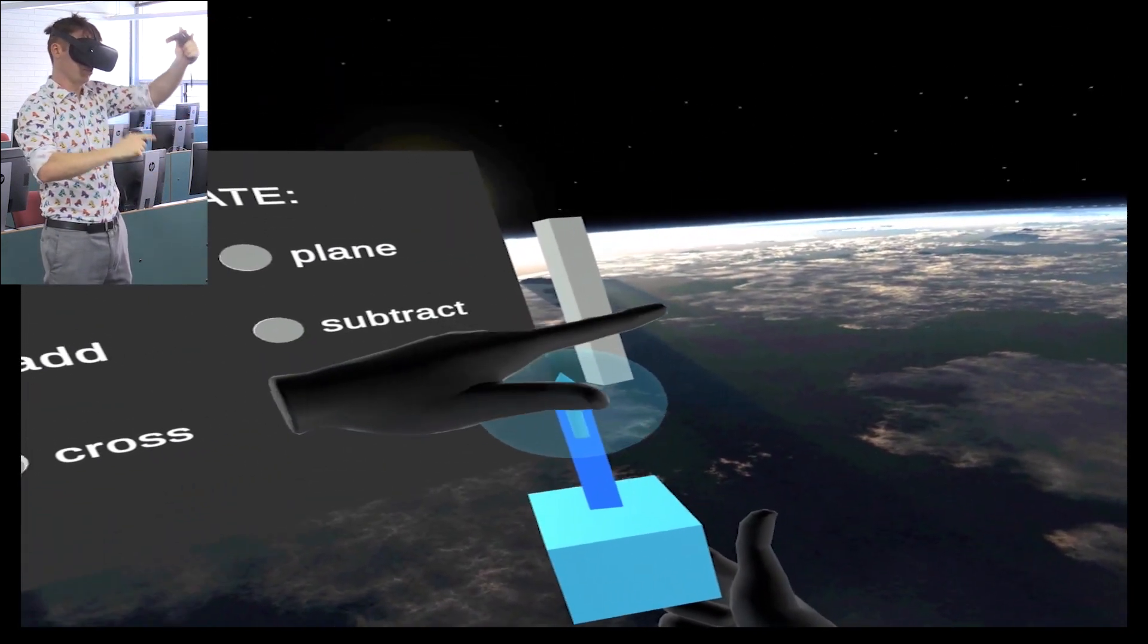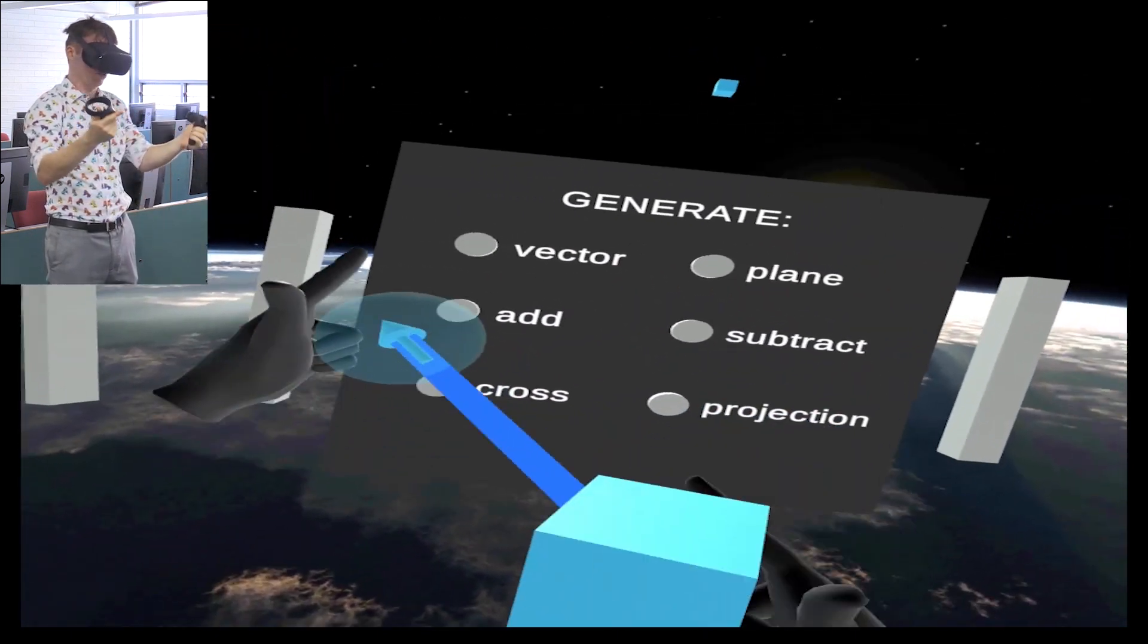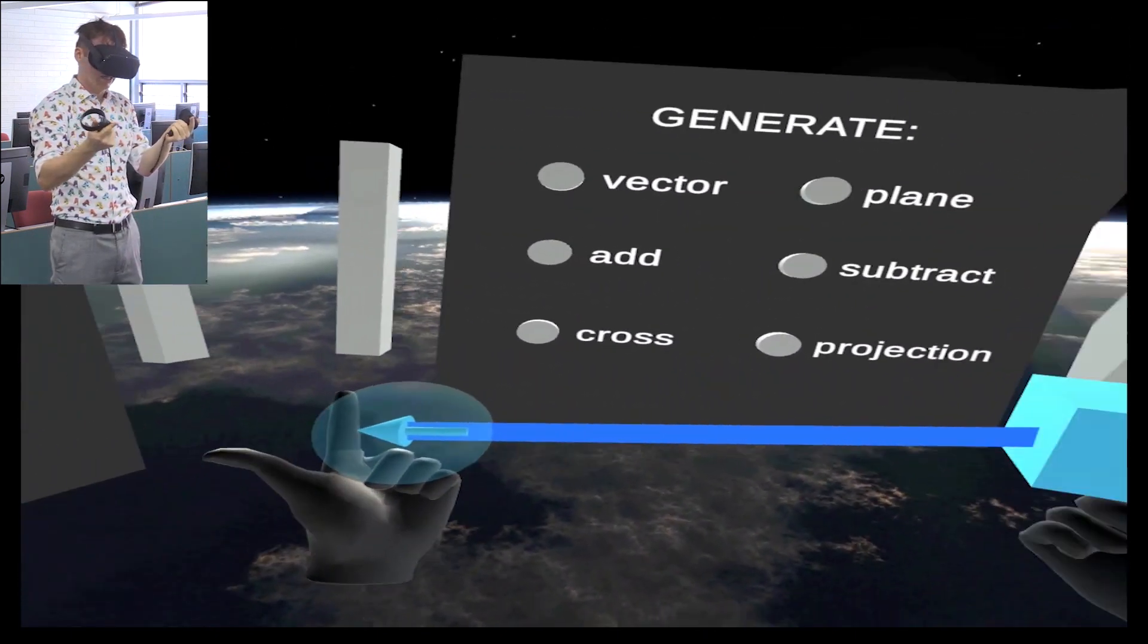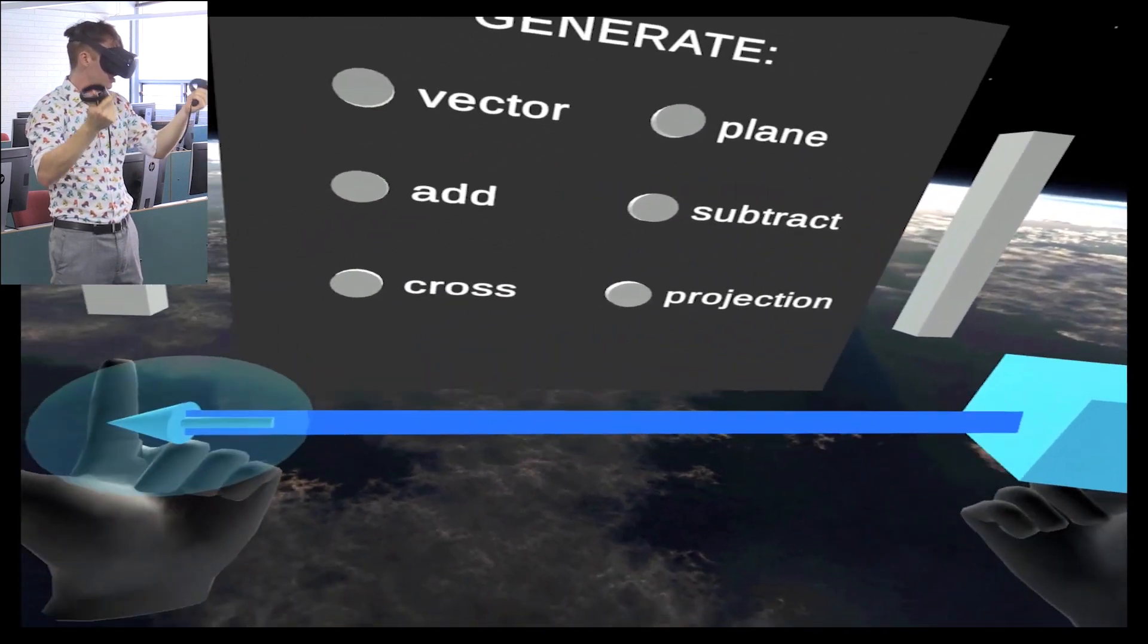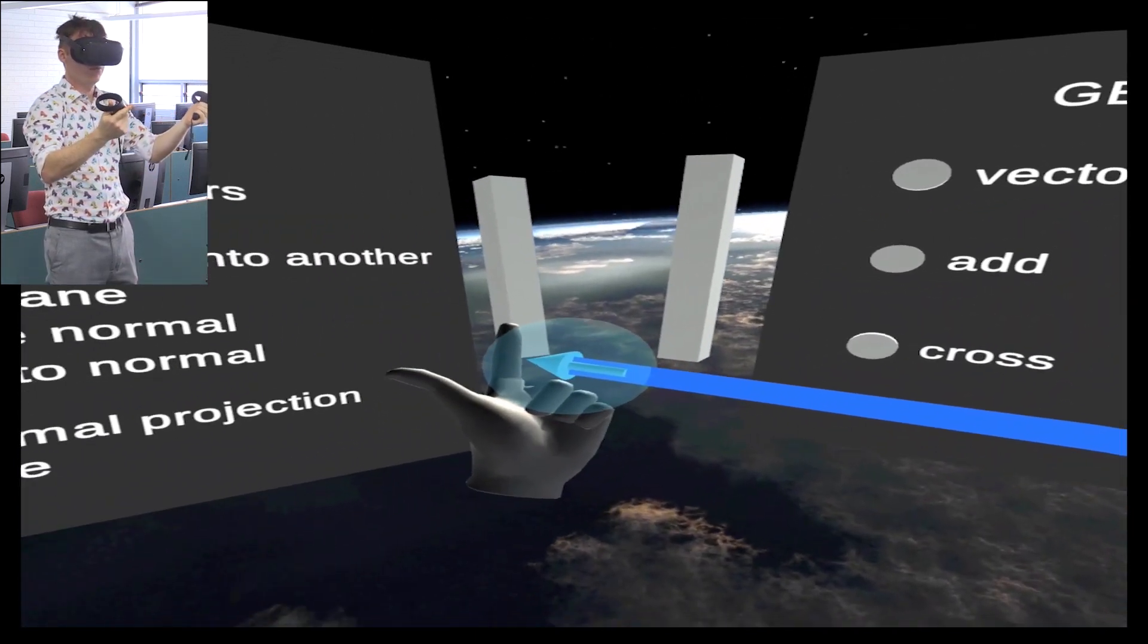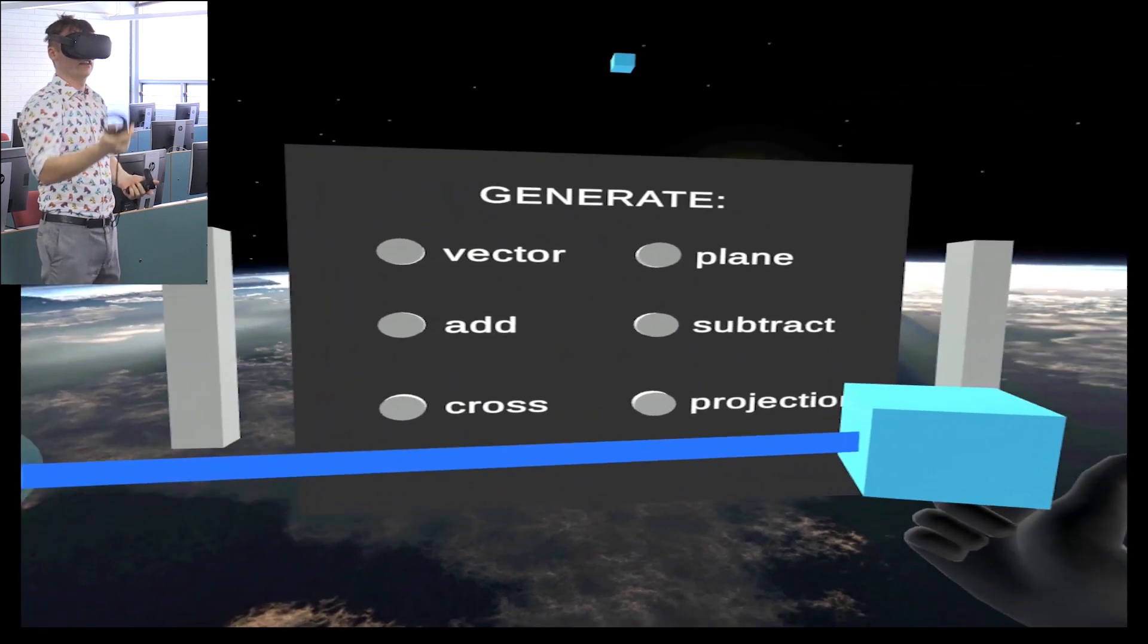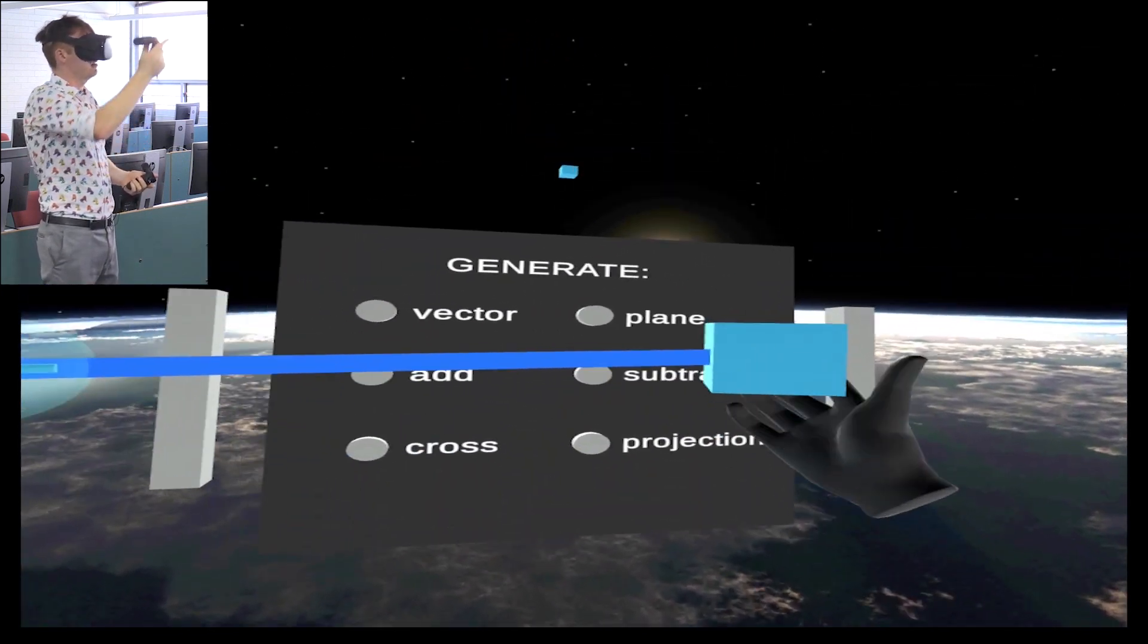And the thing I love about doing this in virtual reality is you can really just get your hands on these things and move them around and see that that's the same vector as that. It's the same thing.